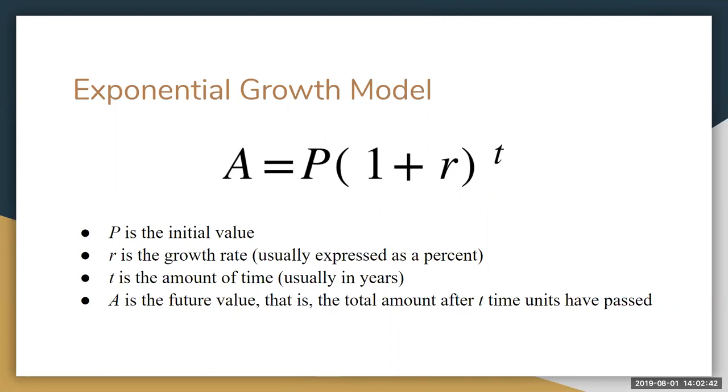In this equation P is standing for the initial value, or when we're talking about money sometimes we'll call it the principal. R is the growth rate usually given as a percent but in the equation we convert it to a decimal first.